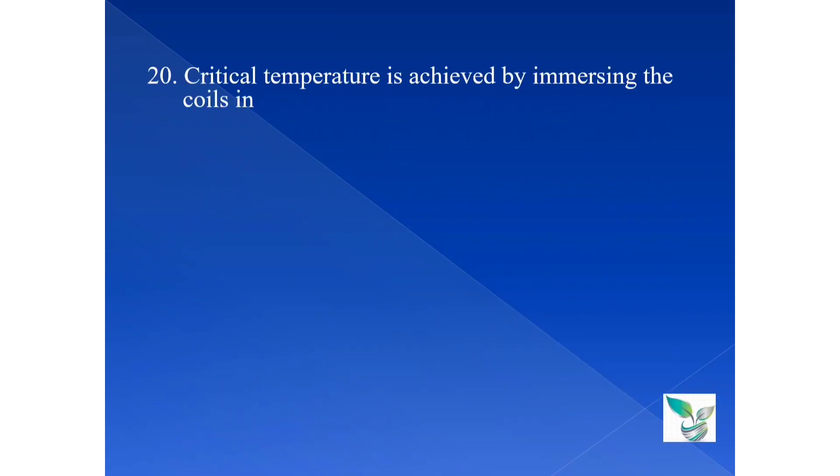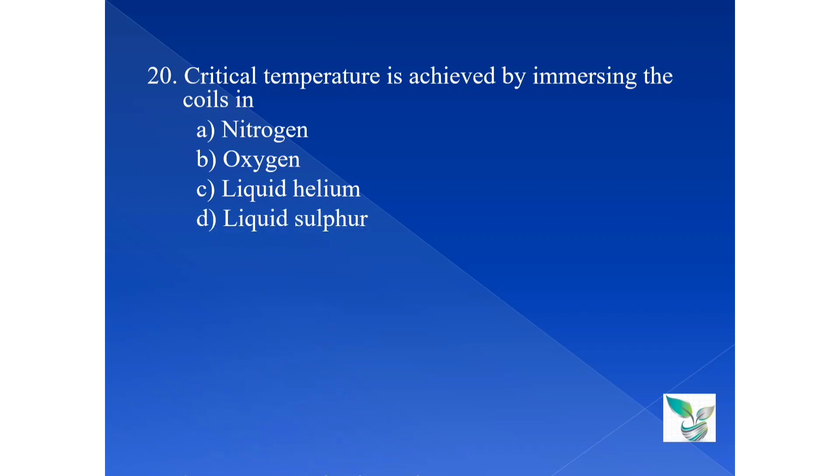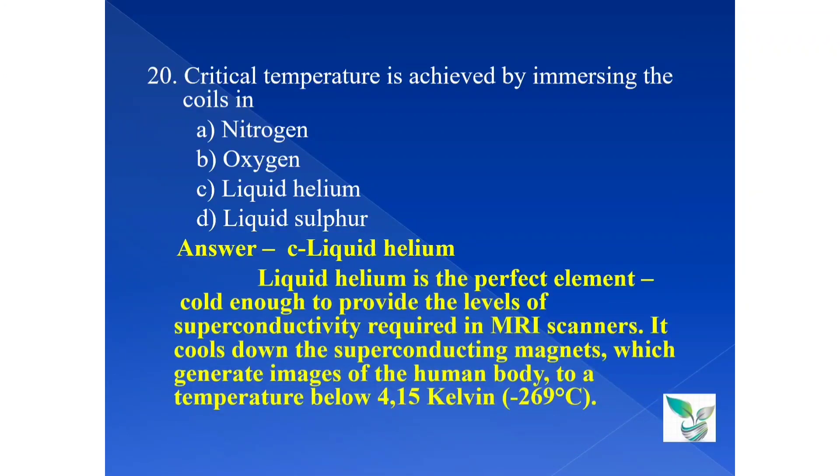Question number 20. The critical temperature is achieved by immersing the coils in: option A nitrogen, option B oxygen, option C liquid helium, and option D liquid sulfur. The answer is option C liquid helium. Liquid helium is the perfect element, cold enough to provide the level of superconductivity required in MRI scanners. It cools down the superconducting magnets which generate images of the human body to a temperature below 4.15 Kelvin, that is minus 269 degrees Celsius.